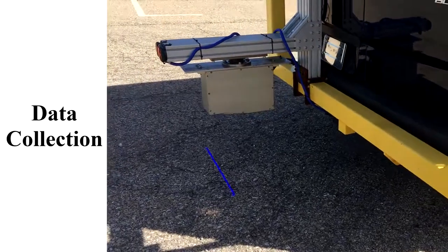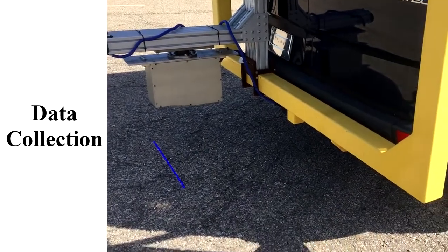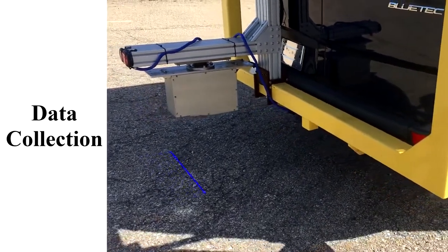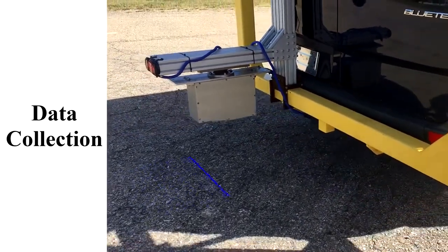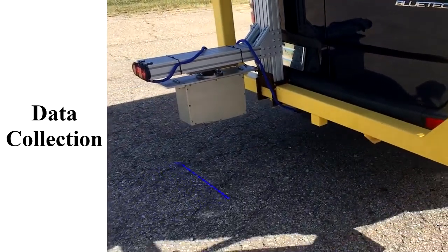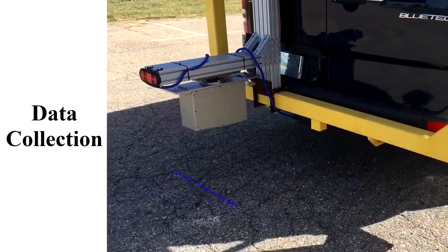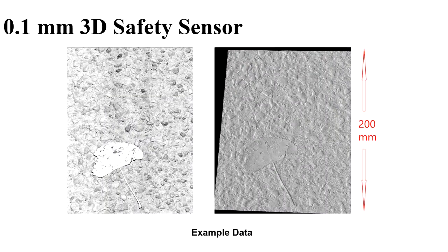This shows the safety sensor during operation, along with an example of 2D and 3D imaging using the 0.1mm 3D safety sensor.